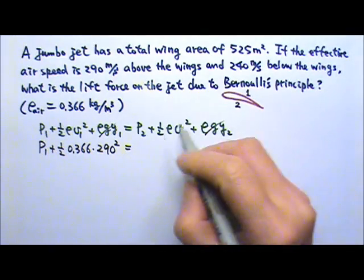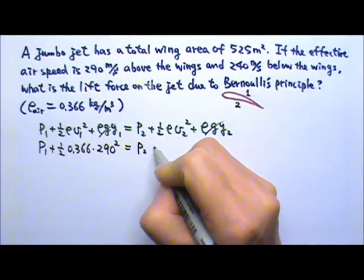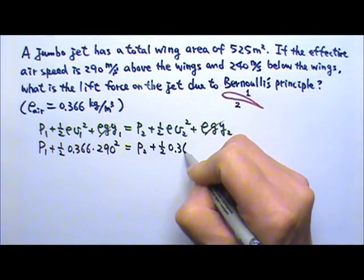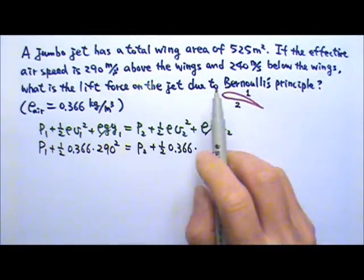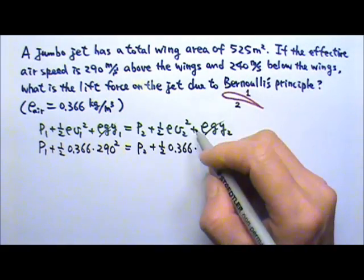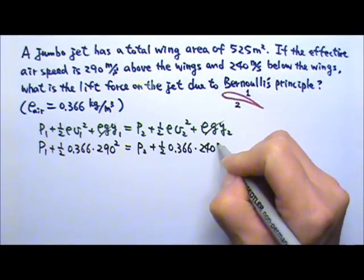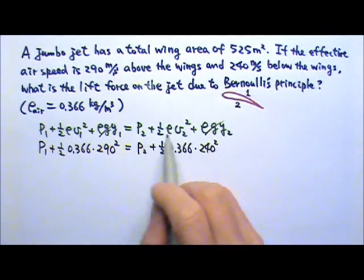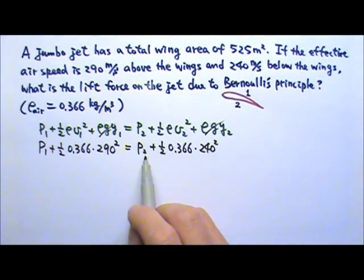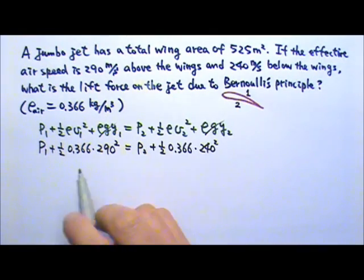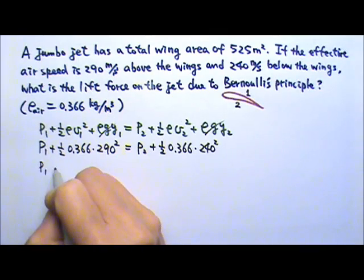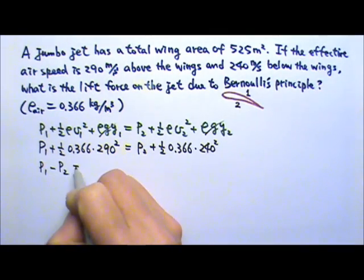Now below the wings the pressure is P2, and again the air density is 0.366. Below the wings the speed is 240, so 240 squared. Now we have one equation with two unknowns. We cannot find P1, we cannot find P2, but we can find the pressure difference. So I can find P1 minus P2.